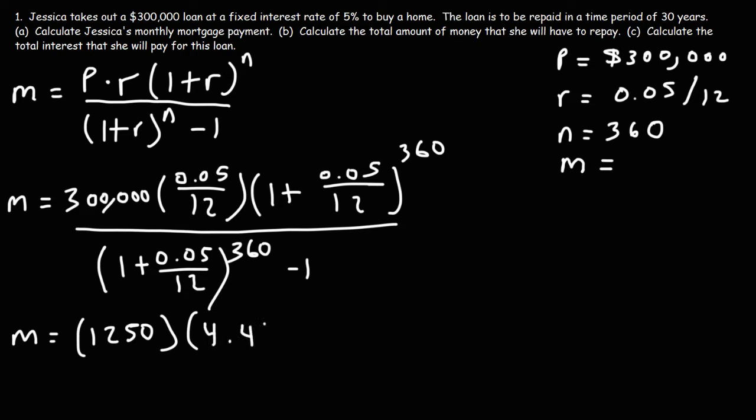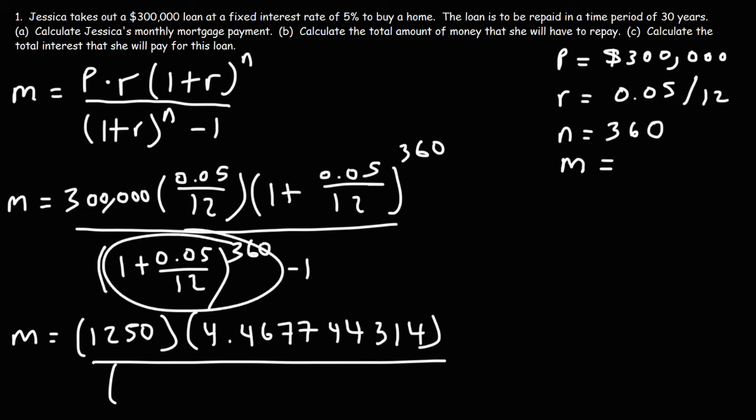So you should get 4.467744314. So this is going to be the same as that number. Well, there's no point in rewriting it. We could just subtract it by 1. So this is 4.4677 and then the rest of that stuff, minus 1. So that's going to be 3.467744314. So 1250 times 4.467744314 divided by the number on the bottom will give us our answer. So the monthly mortgage payment is $1,610.46.